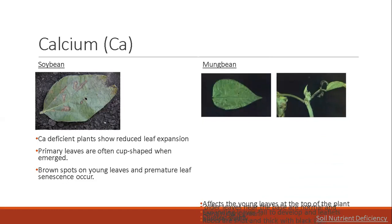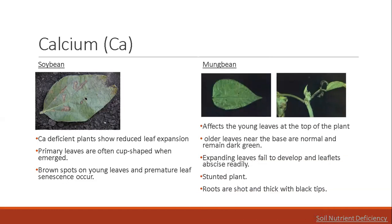In mung bean, calcium deficiency affects the younger leaves at the top of the plant. Older leaves near the base are normal and remain dark green. Expanding leaves fail to develop, and leaflets, petioles, and roots are short and thick with black tips.